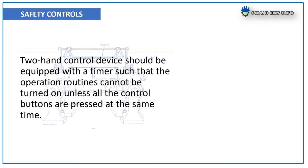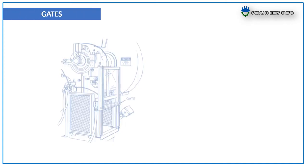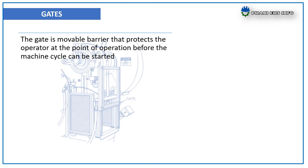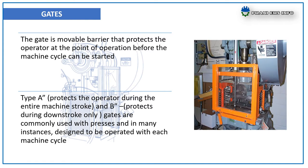Safety controls — the two-hand control device should be equipped with a timer such that the operation routine cannot be turned on unless all control buttons are pressed at the same time. Gates — a gate is a movable barrier that protects the operator at the point of operation before the machine cycle can be started. Type A protects the operator during the entire machine stroke; Type B protects during the downstroke only.